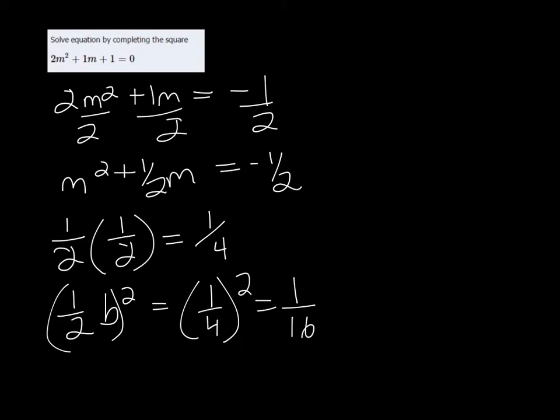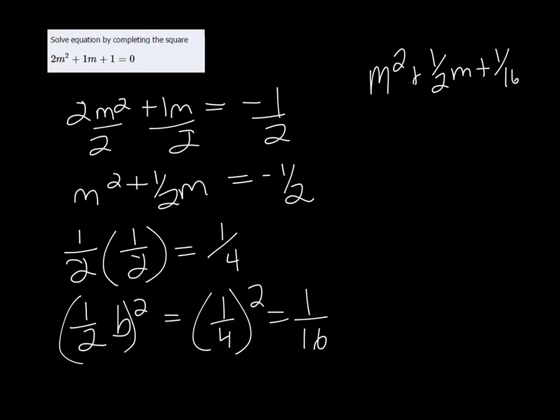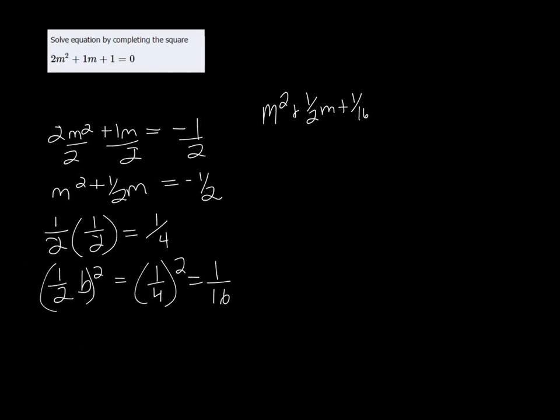So to complete the square, we have M² + ½M + 1/16—I'll shrink it a bit here—equals -½ + 1/16. Whatever you do to one side, you have to do to the other.